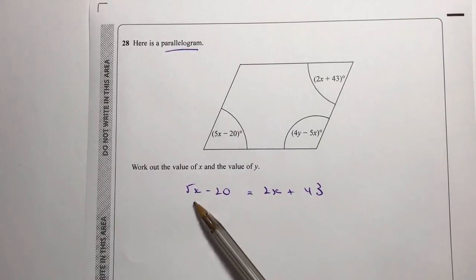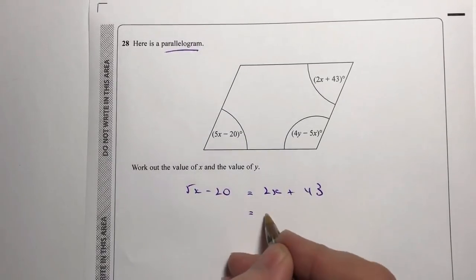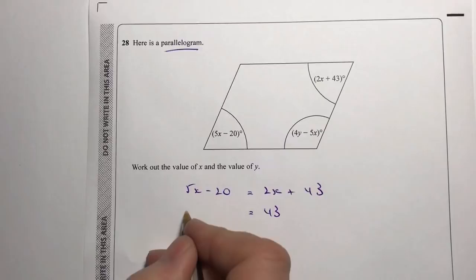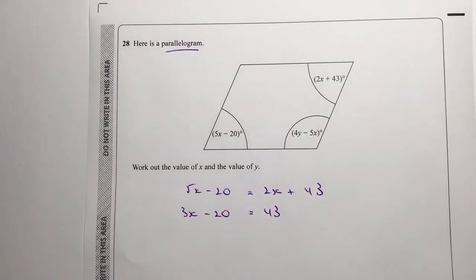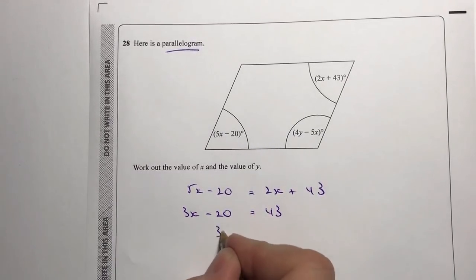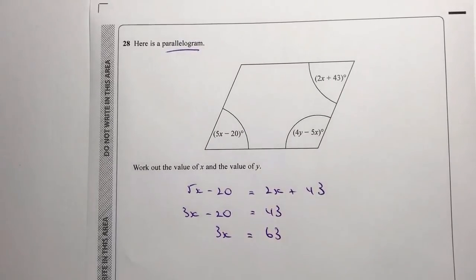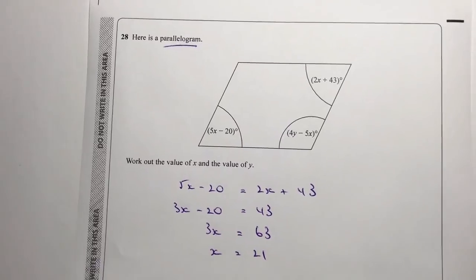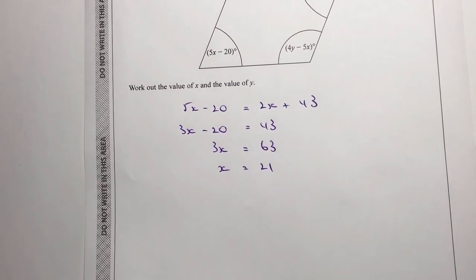I've got 2x on the right, so I'm going to minus 2x from both sides. The right-hand side becomes 43, and the left-hand side becomes 3x minus 20. Then I add 20 to both sides, giving me 3x equals 63. Dividing through by 3, x equals 21.